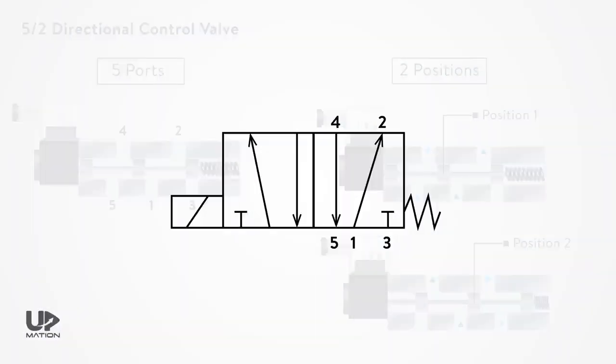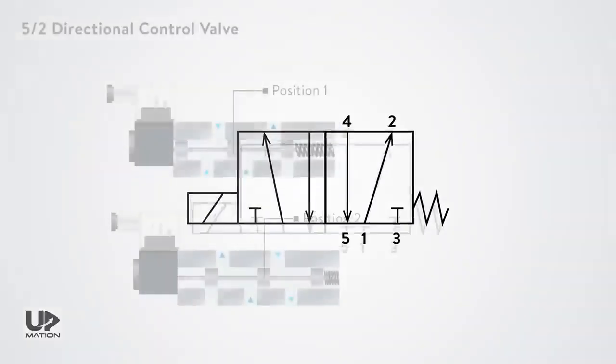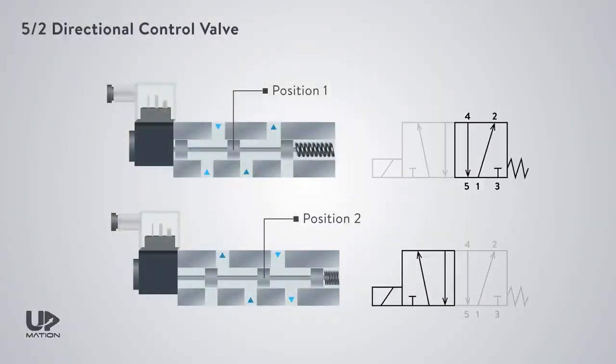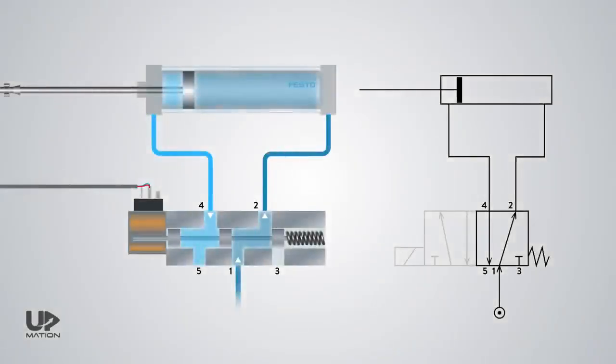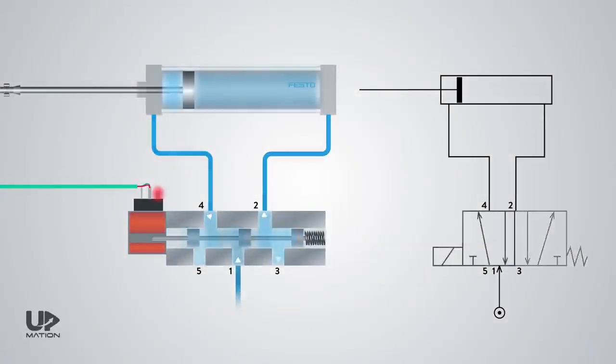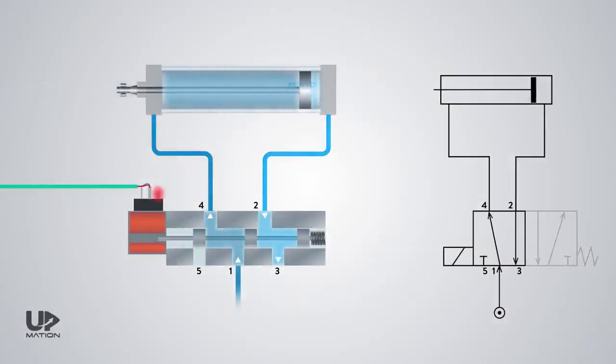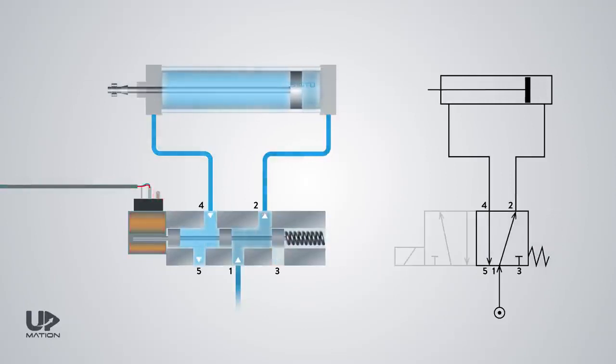Reading and interpreting the symbols may seem a little bit challenging sometimes. For instance, this directional control valve has such a symbol. Each square in the symbol represents a position or state. And in each state, some arrows show the path that air can flow through on that specific position.